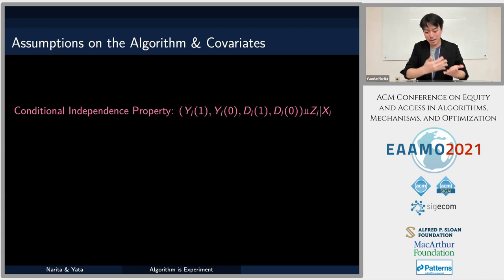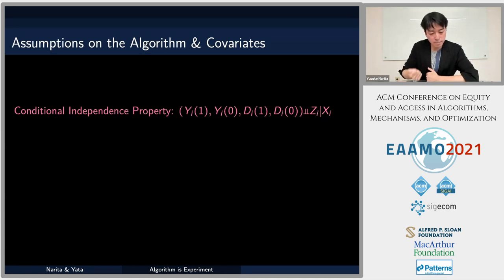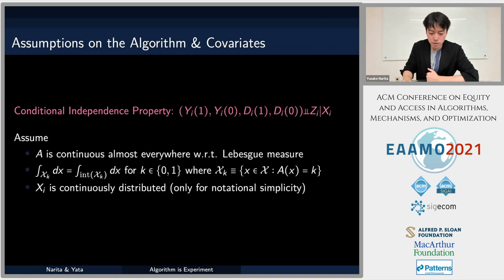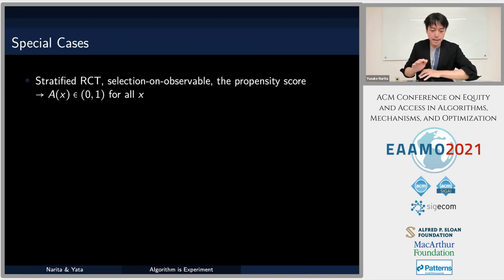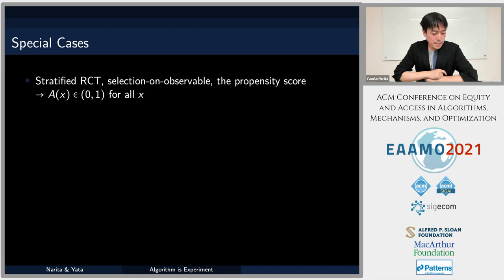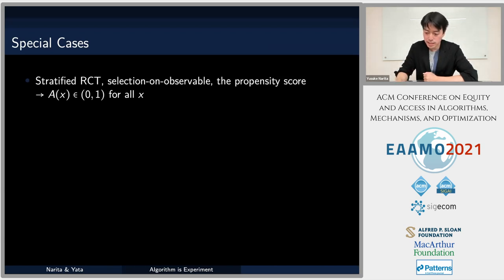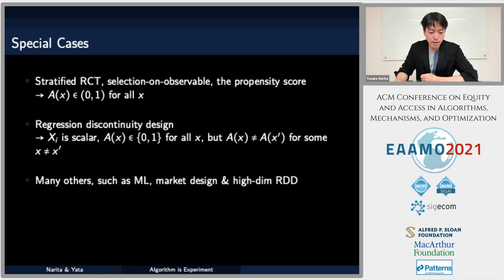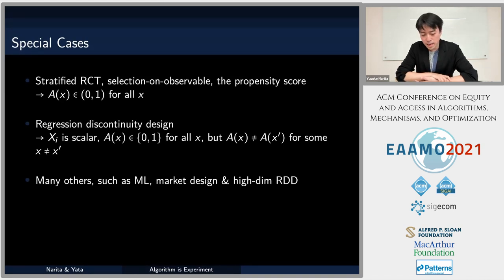Our goal is to provide a treatment effect estimator in this environment. To make sure everybody is on the same page, let me provide a few familiar special cases. One of the simplest special cases is the stratified RCT or propensity score scenario: if the treatment recommendation probability A(x) is always strictly between 0 and 1, this is just a stratified experiment conditioned on observable characteristics x. We know what to do in this setup, but our framework also contains fundamentally different scenarios.